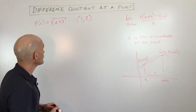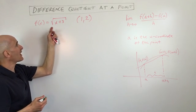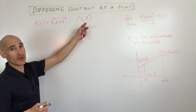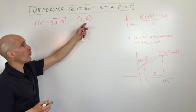So let's go ahead and jump into some examples. What we're going to find out is the slope at this point, one comma two.